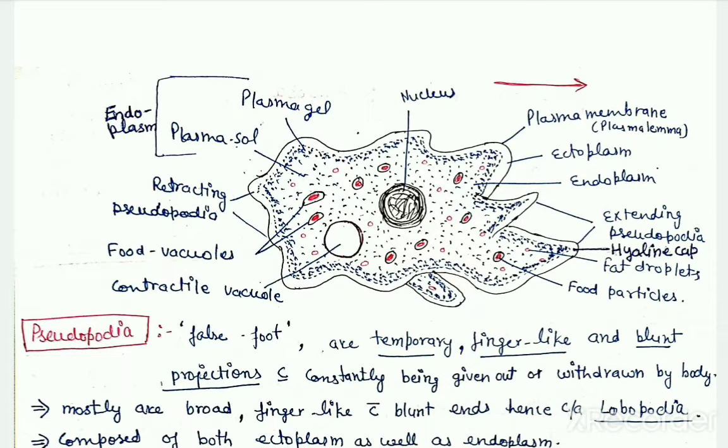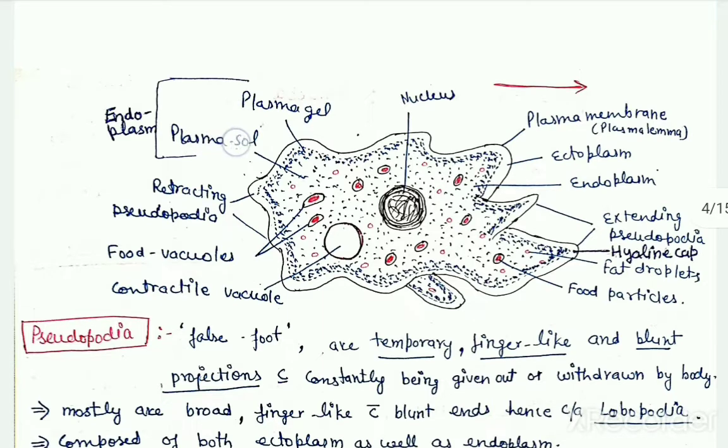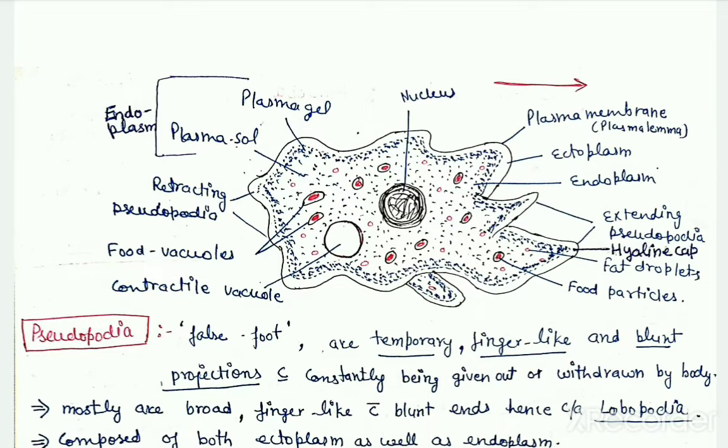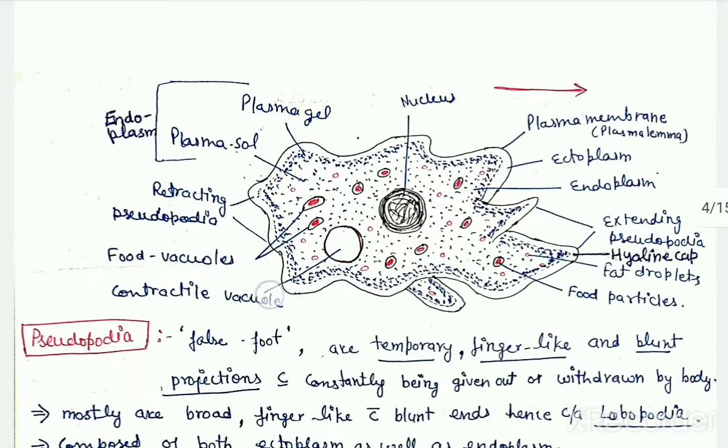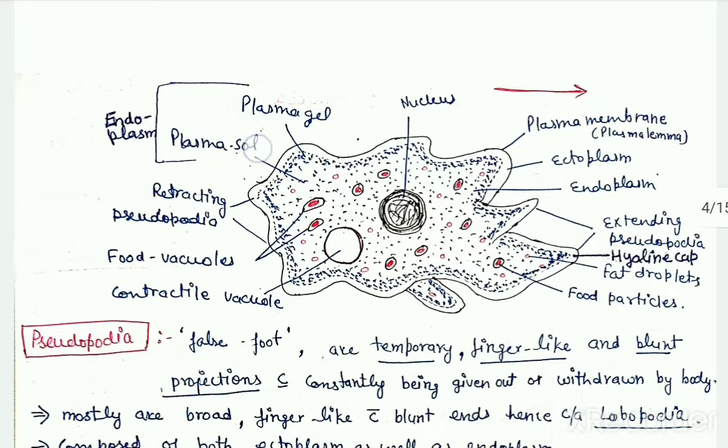Plasma gel, as the name indicates, is the comparatively gelatinous part, and plasma sol is the inner part which is a fluid portion showing streaming movement or cyclosis. All the other parts of the amoeba including nucleus, food vacuoles, contractile vacuole, and all the cell organelles like mitochondria and endoplasmic reticulum are present in the plasma sol only. So plasma sol is the largest or most abundant part in amoeba.